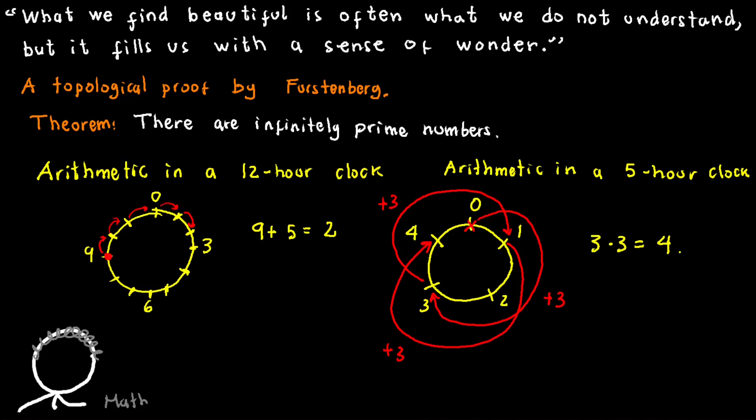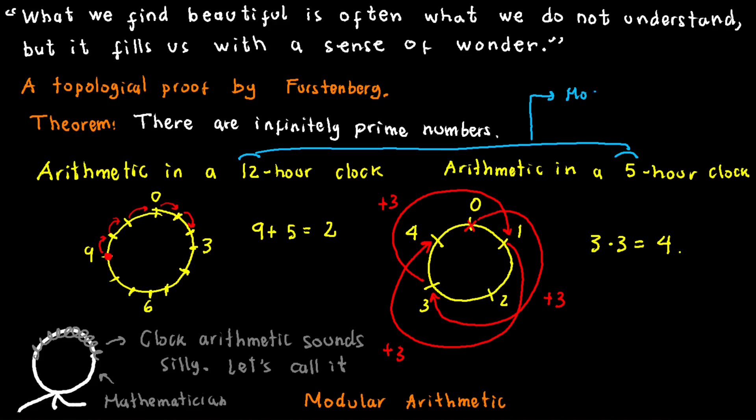Rather than using the term clock arithmetic, mathematicians have adopted the more sophisticated phrase modular arithmetic. In modular arithmetic, the modulus refers to the size of the clock, and we say two numbers are congruent if their difference is a multiple of the modulus.